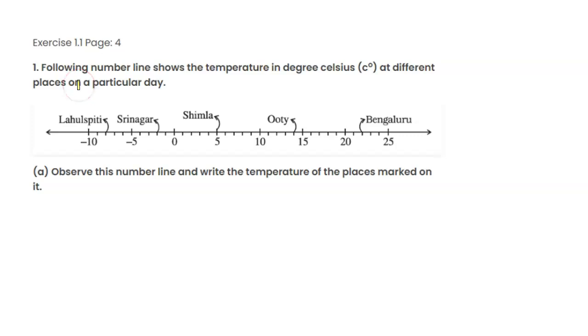Hello to everyone, welcome back to my channel. Today's question is: Following number line shows the temperature in degree Celsius at different places on a particular day. Observe this number line and write the temperature of the places marked on it.